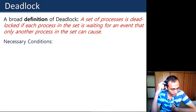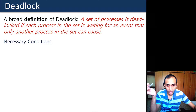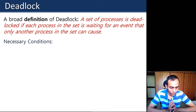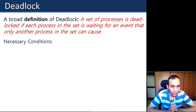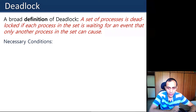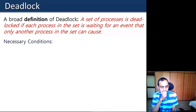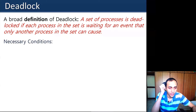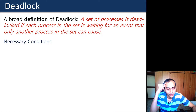Good afternoon everyone. In yesterday's class we basically started the topic of deadlock — we discussed what deadlock is and the four conditions which all must be satisfied for a deadlock to occur. Does anybody remember? You can speak out. Mutual exclusion — good. Any other? Yes, circular dependency.